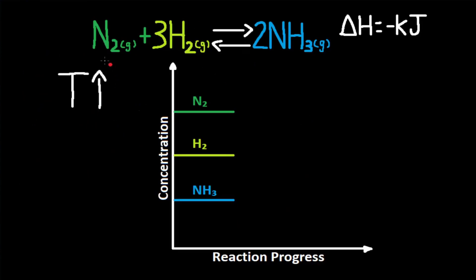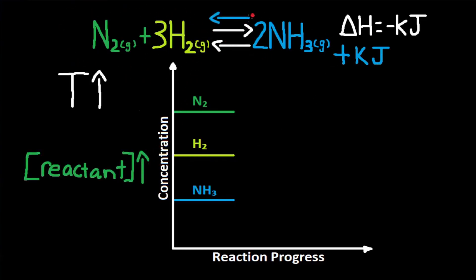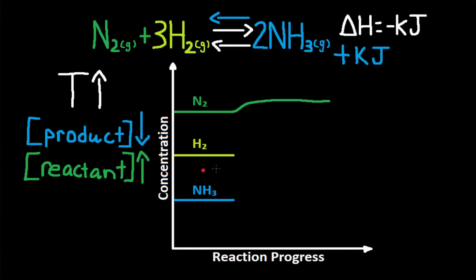If temperature is increased, describe the effect on the graph. This is an exothermic reaction because enthalpy is negative, so heat can be treated as a product. Temperature increases — don't point at what is being increased — so this is a shift left. A shift left points at the reactants so the reactants increase, and doesn't point at the products so the products decrease. N2 and H2 are reactants so they increase; NH3 is a product so it decreases.